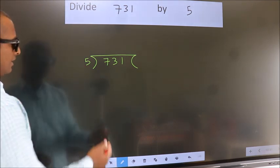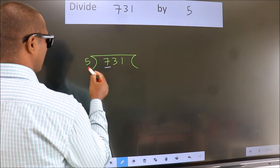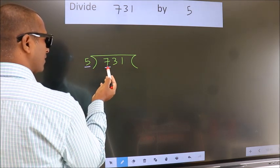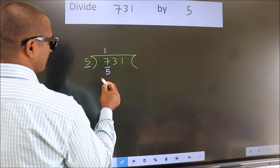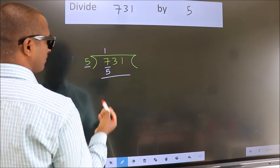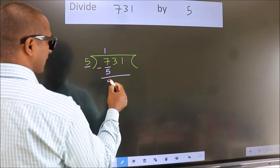Next. Here we have 7, here 5. A number close to 7 in the 5 table is 5 once is 5. Now, we should subtract. We get 2.